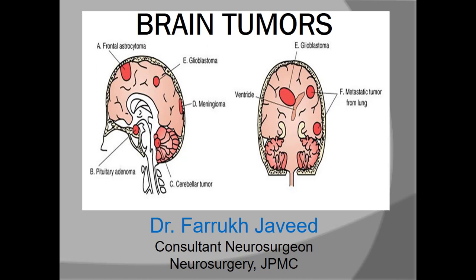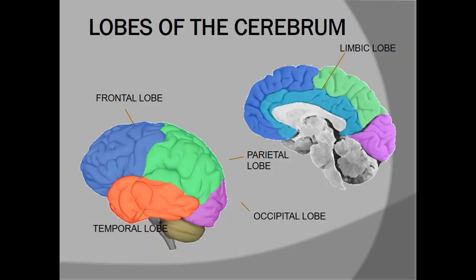Before going to the topic, I want you to recall the different parts of the brain, which are divided into right and left, or supratentorial and infratentorial components. The supratentorial part contains different lobes like frontal, parietal, temporal, and occipital lobe. The infratentorial part contains the cerebellum, brainstem, and cerebellopontine angle — that is, CP angle.